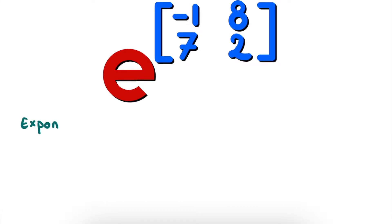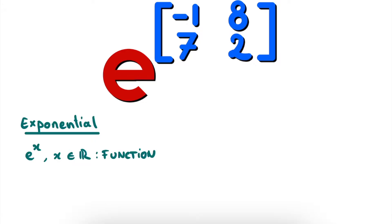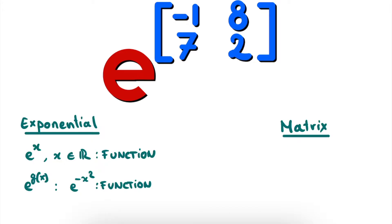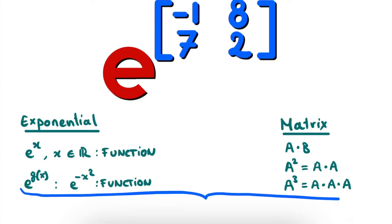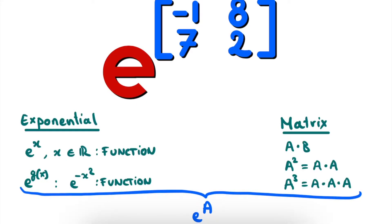We know of course what the exponential of a real number is. e to the power of x is simply a function which takes in a number x and spits out another number. We even know how to take the exponential of a function of x — for example, e to the power of minus x squared, where minus x squared is simply another function in x, and this entire e power is in its own again a function. For matrices in particular, we know how to multiply them, and therefore we also know how to calculate basic powers of a matrix A. For example, A squared is simply A multiplied with A, A cubed is A multiplied with A multiplied with A, and so on. So knowing these two fields in mathematics separately, how do we now combine them in order to calculate e to the power of a matrix? And that's what we'll turn to next by solving an exercise step by step, where I explain everything I do along the way.